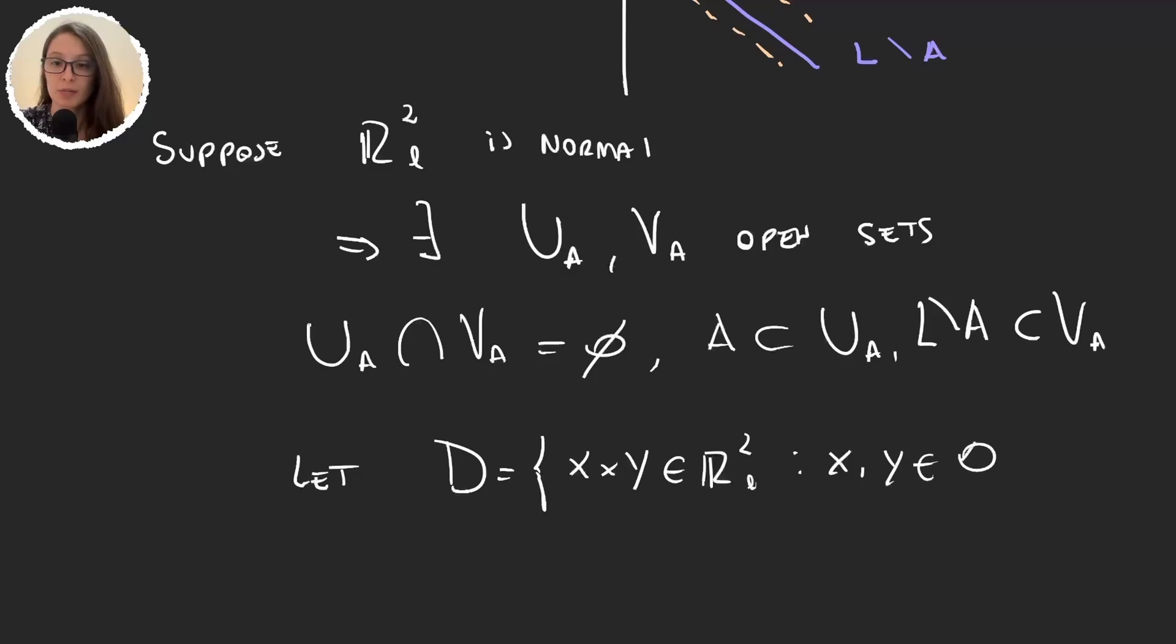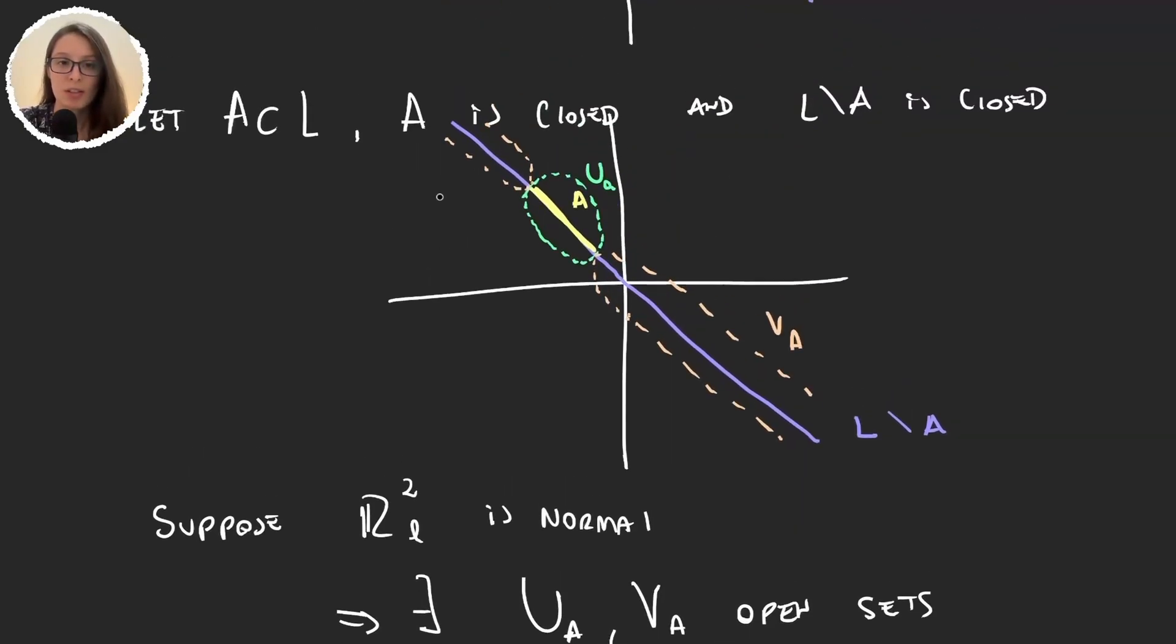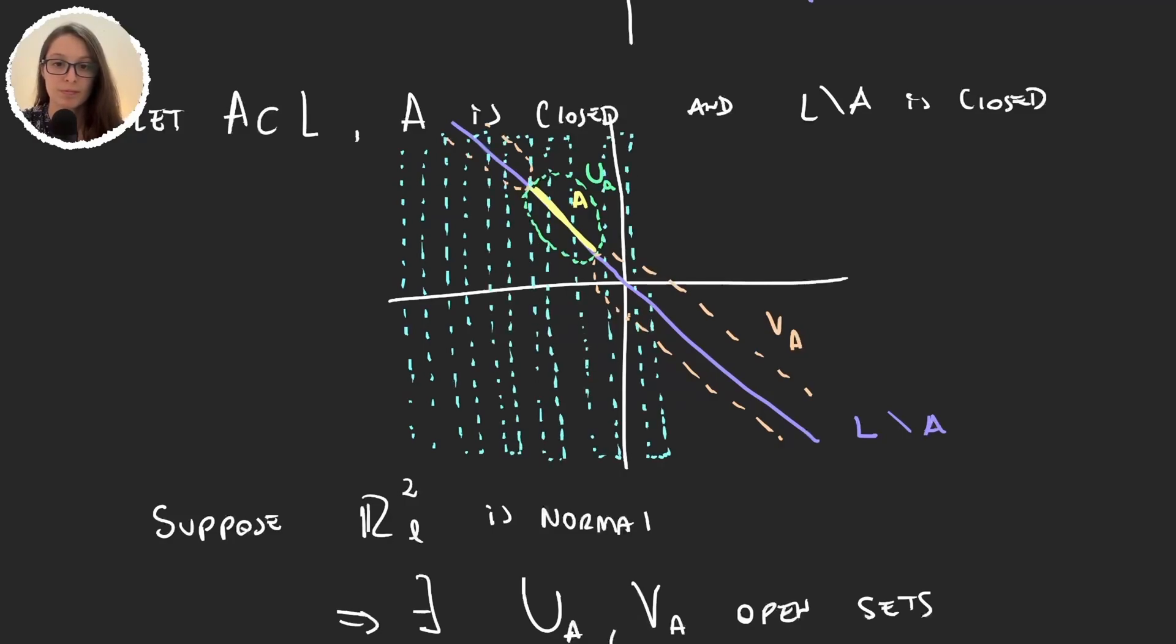We will take the set of elements in the plane that have rational coordinates. So X and Y will be rational numbers. Well it's very easy to see that the set D is dense in the Sorgenfrey plane. D is going to be just a dense amount of points in the plane.